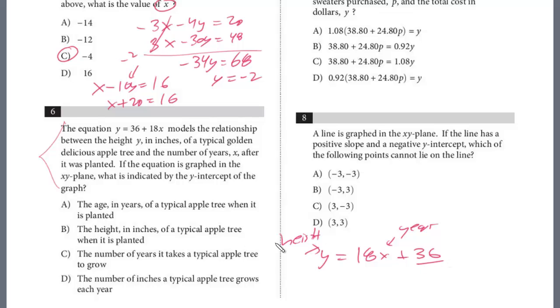Let's take a look at the choices here. Is it the age in years when it's planted? Not the age, because the y is height. That's what we labeled it, the height in inches of typical apple tree when it's planted. And so that's the answer. 6 is B.